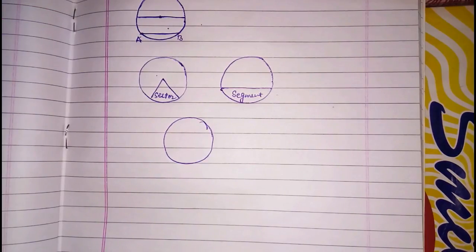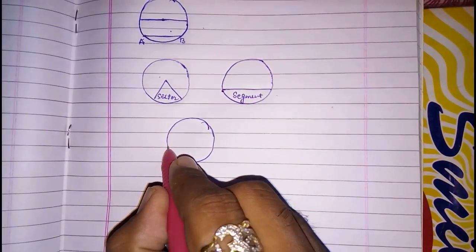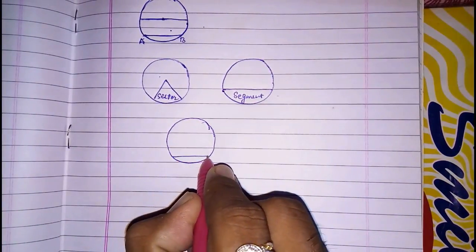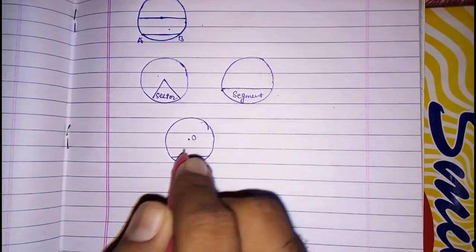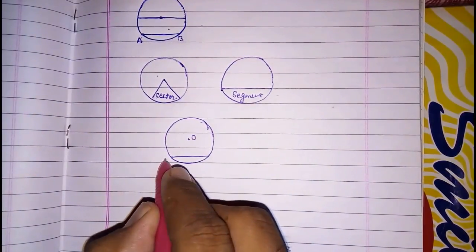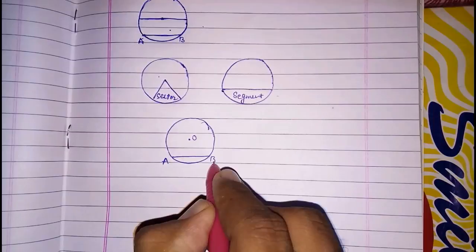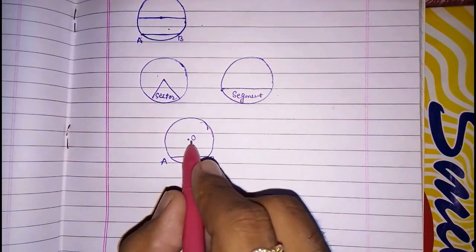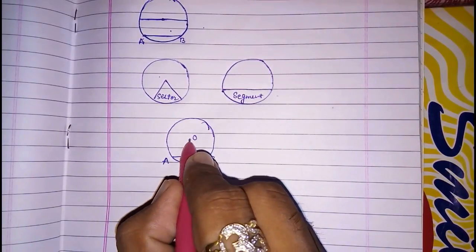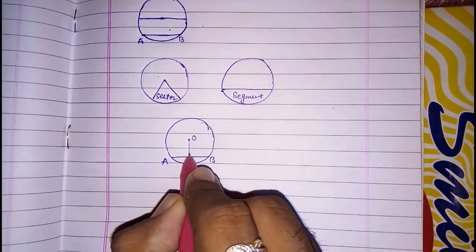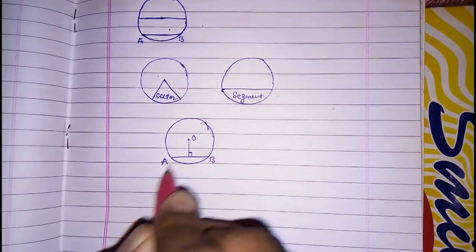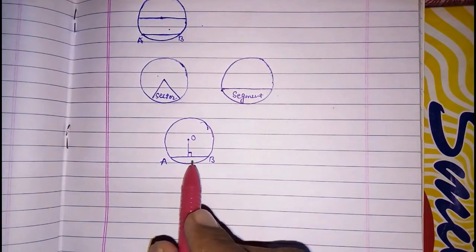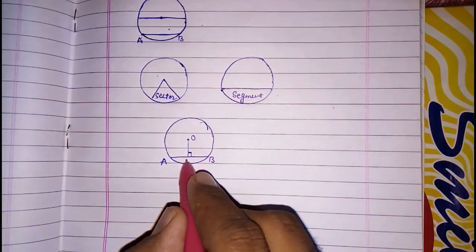Now we are going to study about the relation between a chord and a circle. This is chord AB and this is the center point of the circle. If we construct a perpendicular from the center onto the chord, then it will bisect the chord.